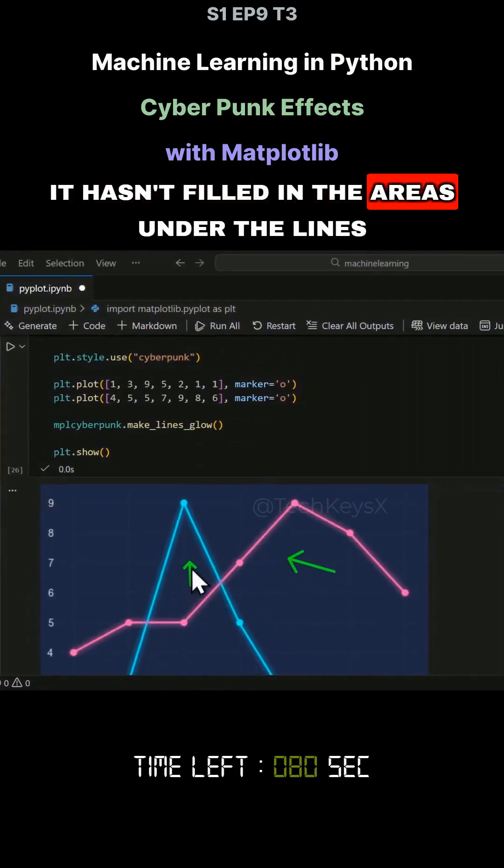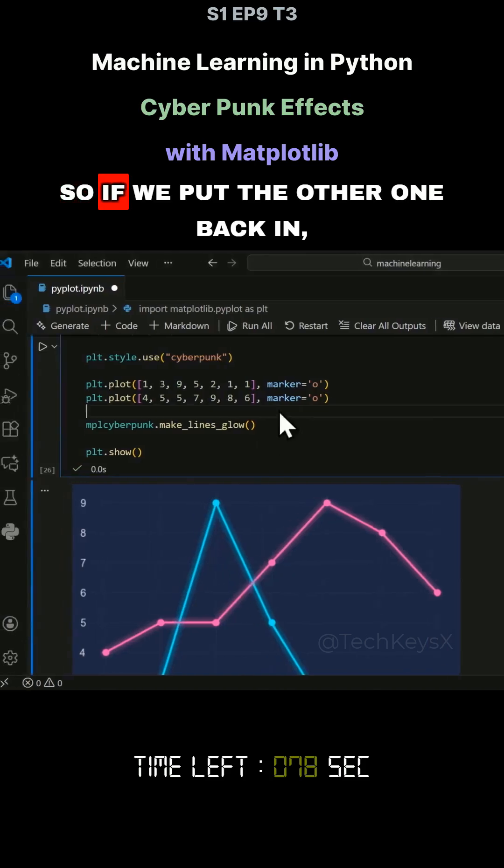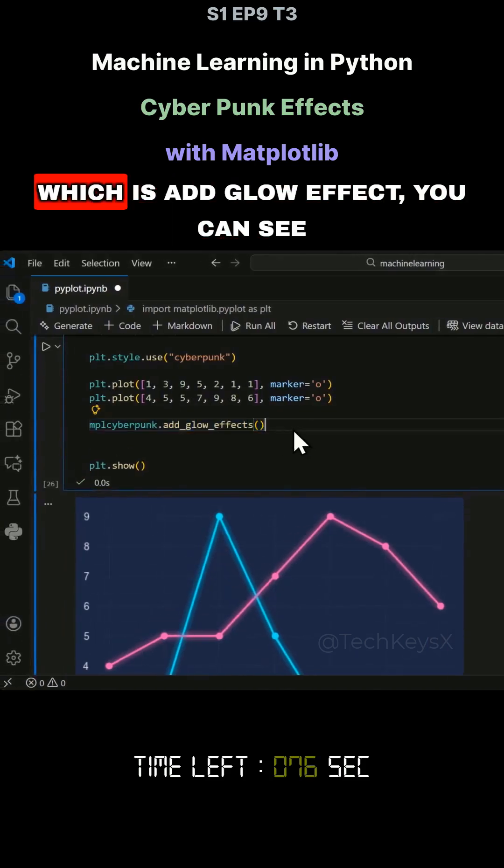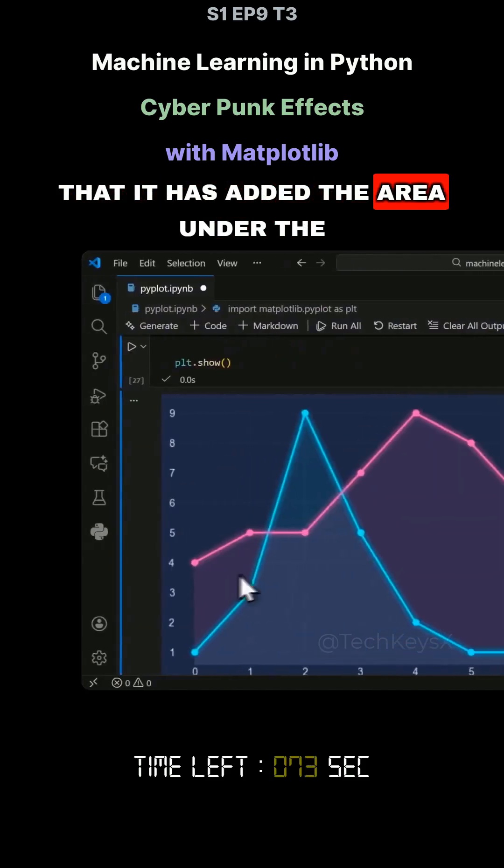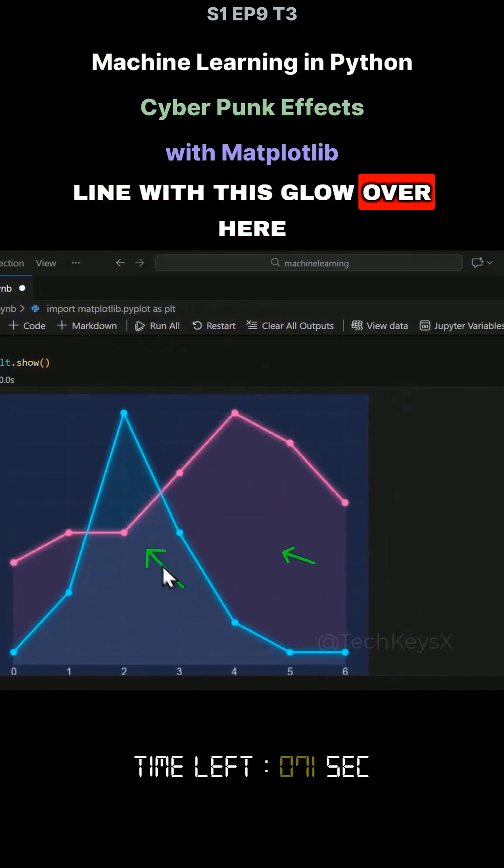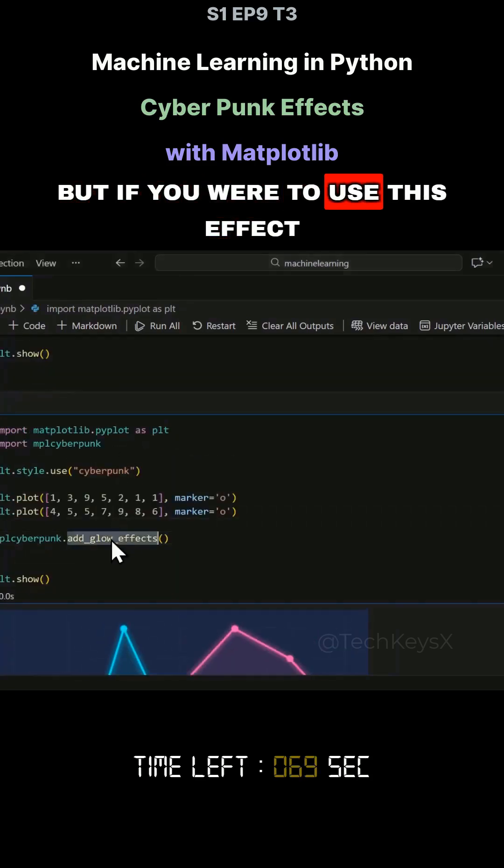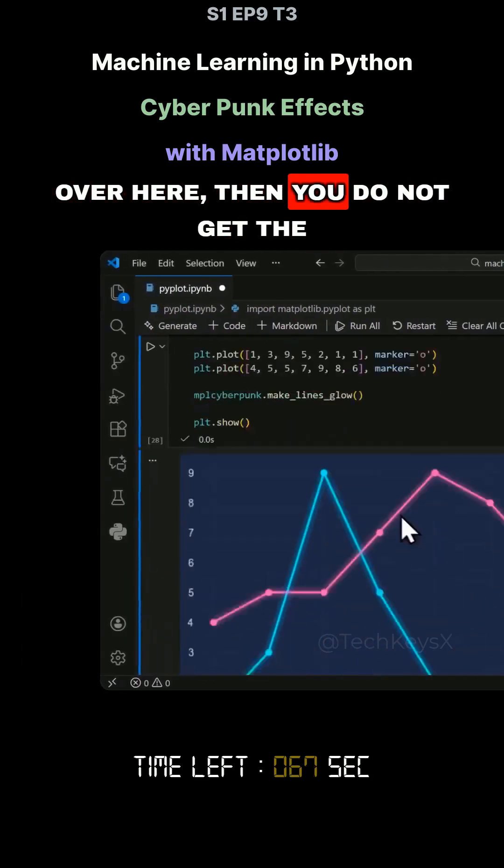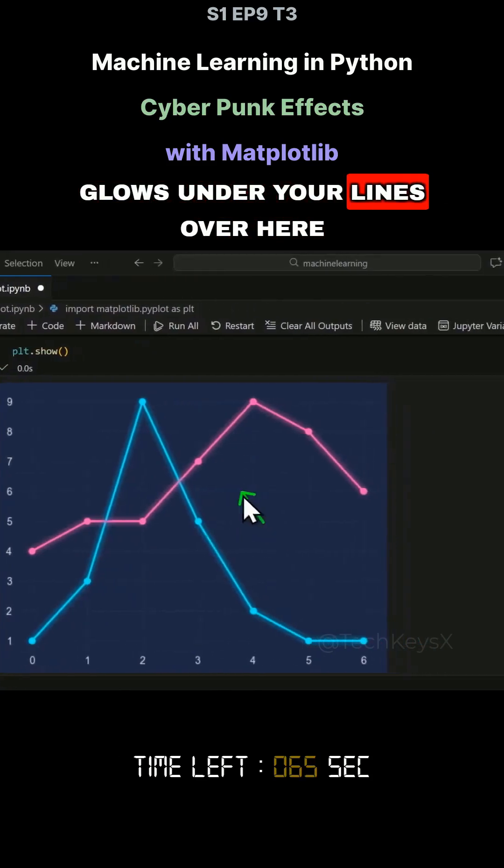It hasn't filled in the areas under the lines. So if we put the other one back in, which is add glow effect, you can see that it has added the area under the line with this glow over here. But if you were to use this effect over here, then you do not get the glows under your lines over here.